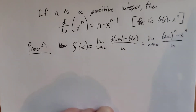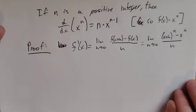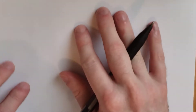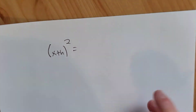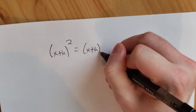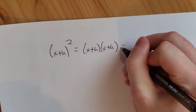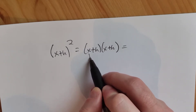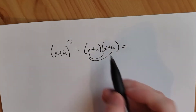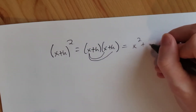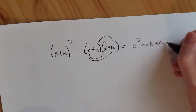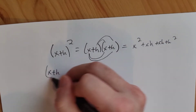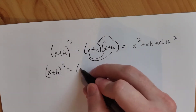Now we have to figure out what x plus h to the nth power is. Let's think about what that actually means on a separate paper. Suppose we had x plus h squared — that means x plus h times x plus h. We take x and multiply it by everything: we get x squared and a term xh. Then we take the h and multiply it by everything: we get another xh and an h squared.